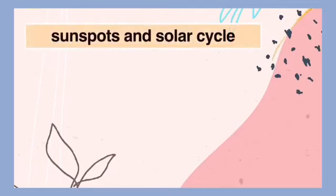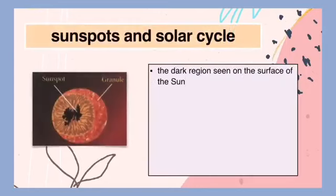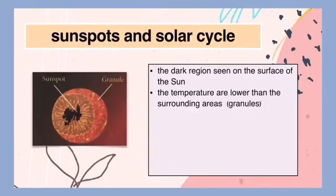Sunspots and solar cycle. Sunspots are the dark regions seen on the surface of the sun. Sunspots appear dark because their temperatures are lower than their surrounding areas which are made up of granules.